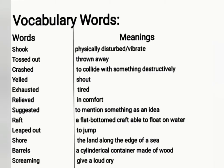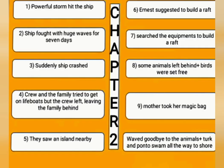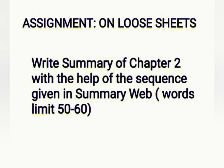You have to read chapter 2 by yourself. Here are some vocabulary words which you have to do on your copies, and some main points of chapter 2 as well. A powerful storm hit the ship. The ship fought with huge waves for seven days, then suddenly the ship crashed. The crew and the family tried to get on lifeboats but the crew left, leaving the family behind. They saw an island nearby. Ernest suggested building a raft. They searched for equipment to build the raft. Some animals were left behind and birds were set free. Mother took her magic bag, then waved goodbye to the animals stuck, and they swam all the way to the shore.